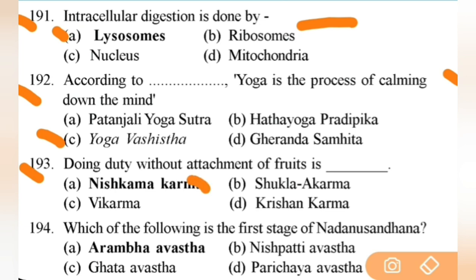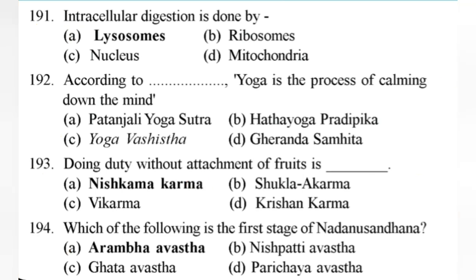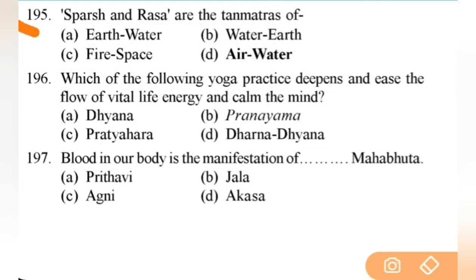The first stage of Nadanusandhana is — right answer is A — Arambhavastha. Next: Sparsha and Rupa are Tanmatras of — right answer is D — air and water — important. Next: which yoga practice deepens the flow of vital life energy and calms the mind? Right answer is pranayama — important. Next: blood in our body is the manifestation of which Mahabhuta? Right answer is A.